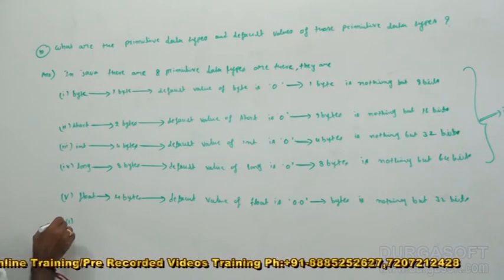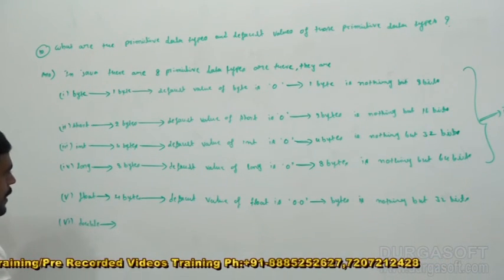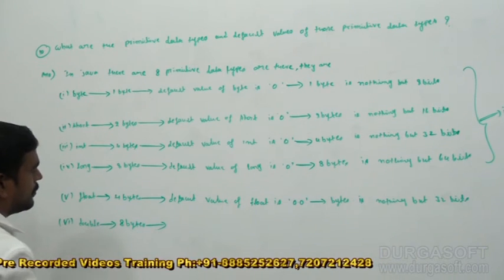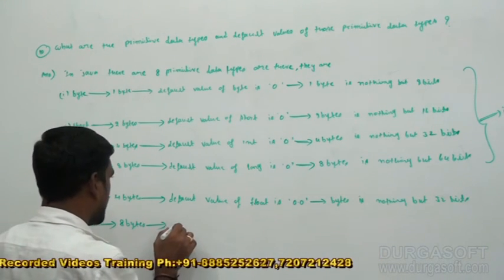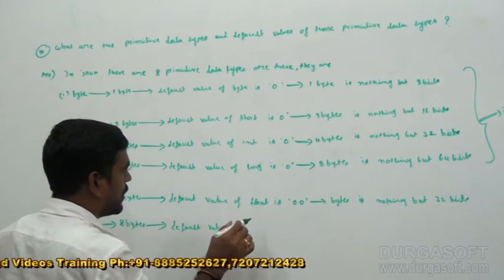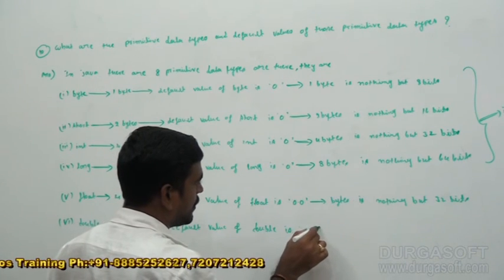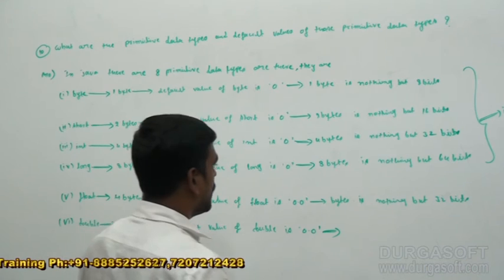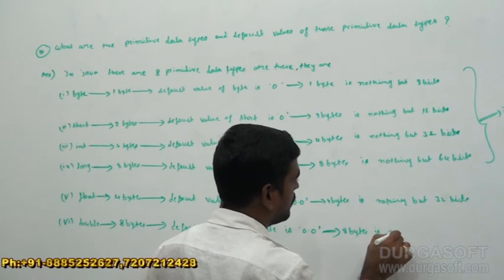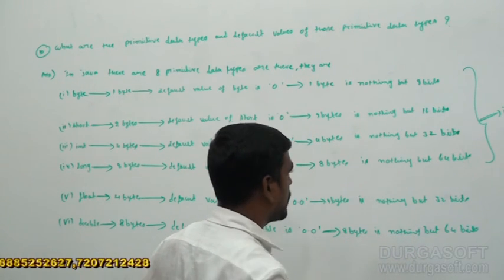The sixth data type is double. Eight bytes of information is going to be occupied by double. The default value of double is 0.0, and 8 bytes is nothing but 64 bits of information.